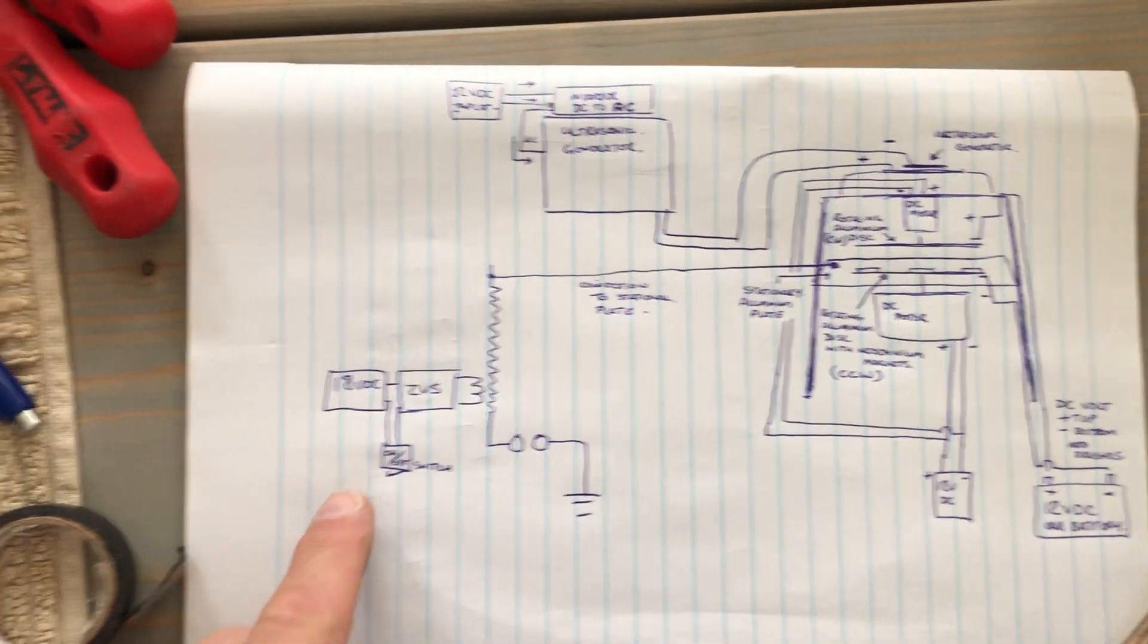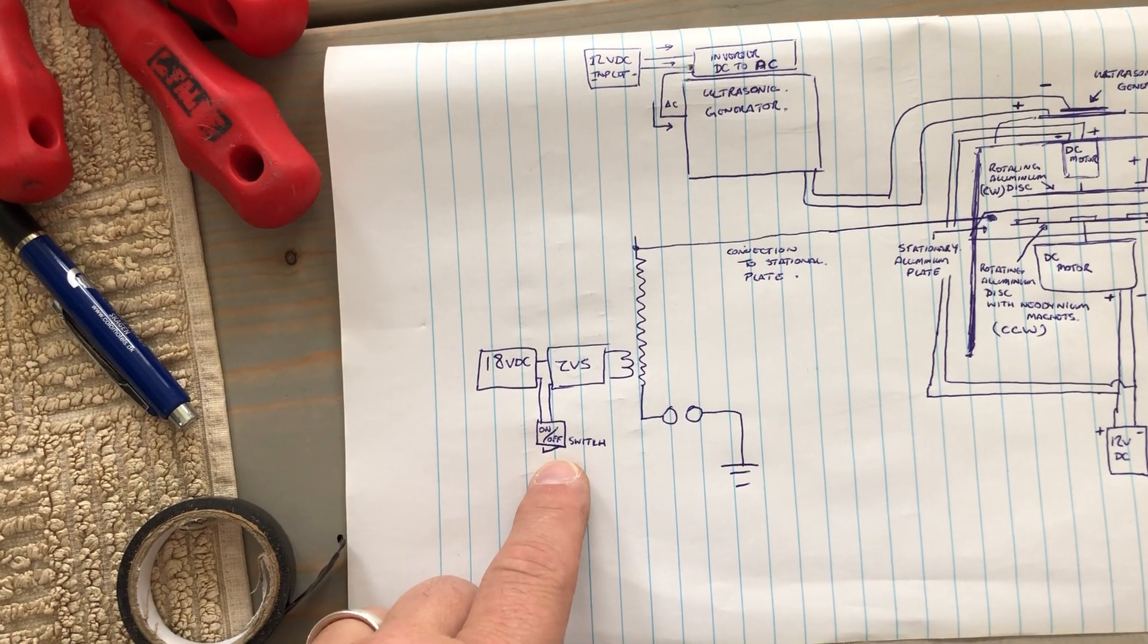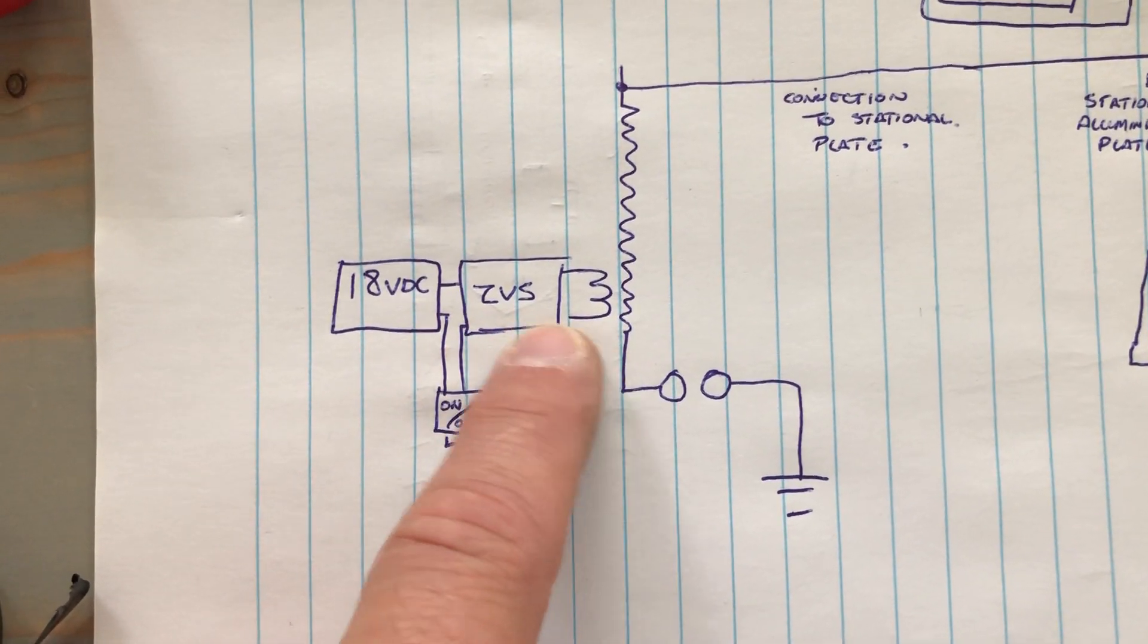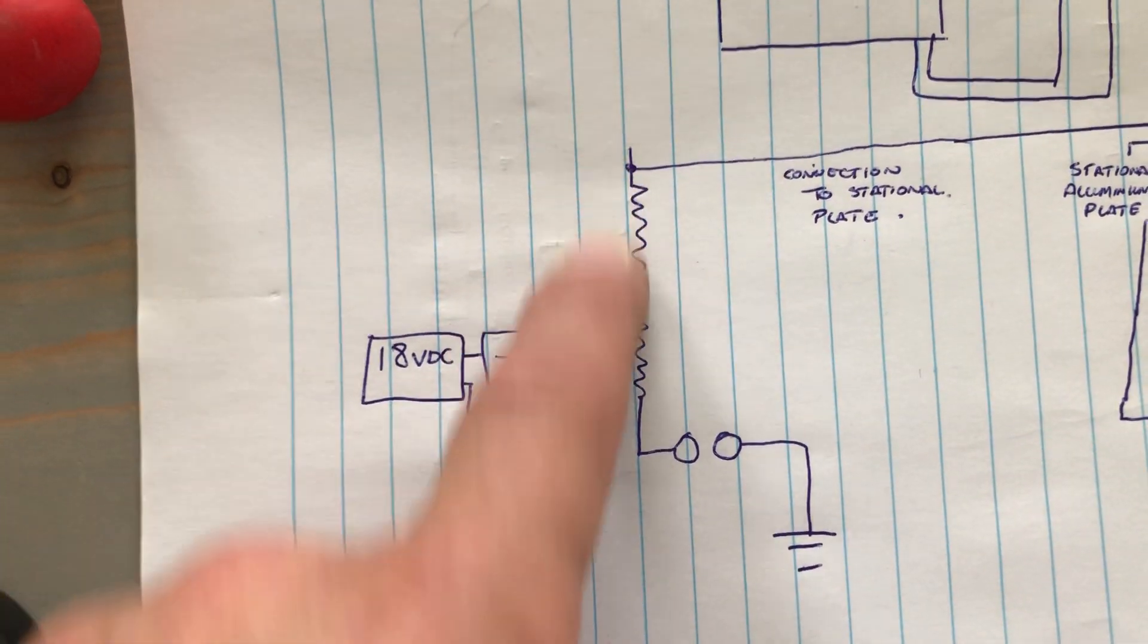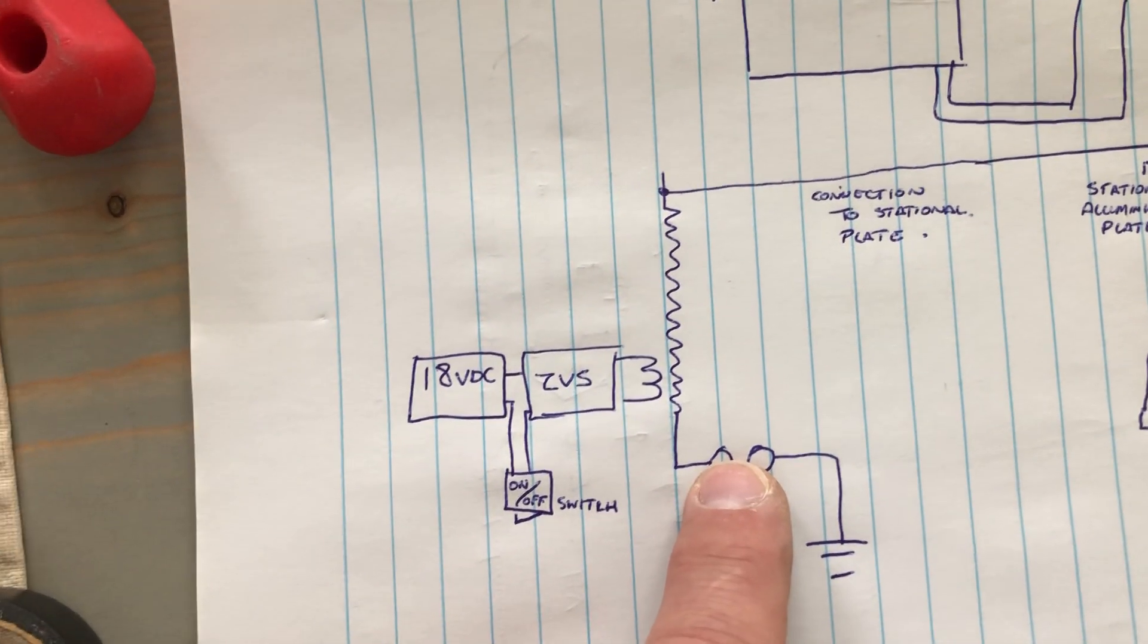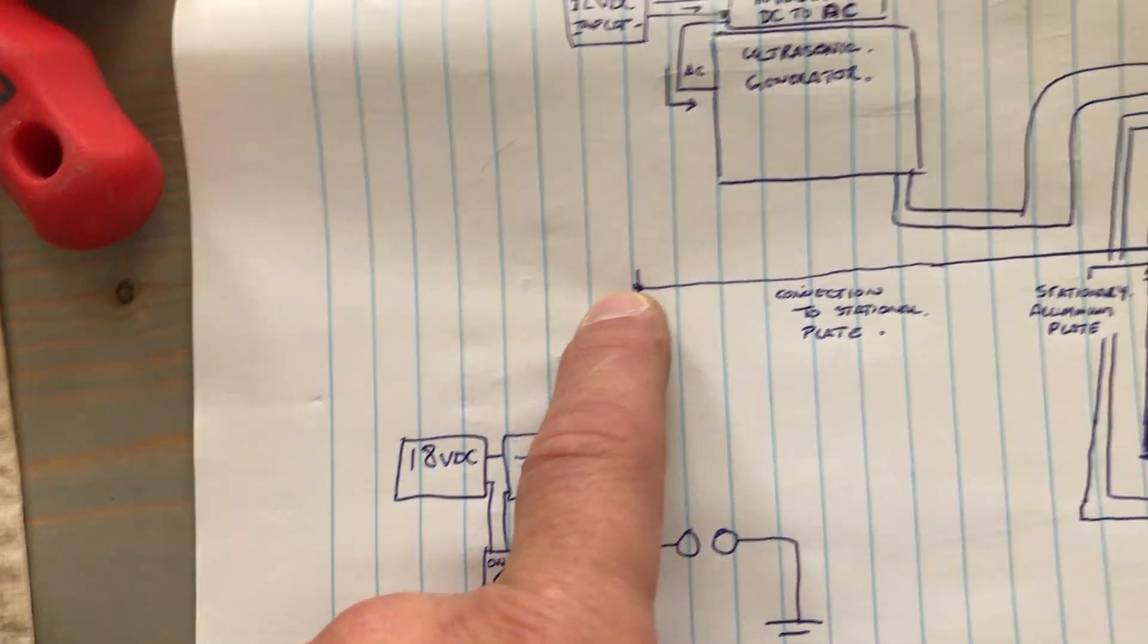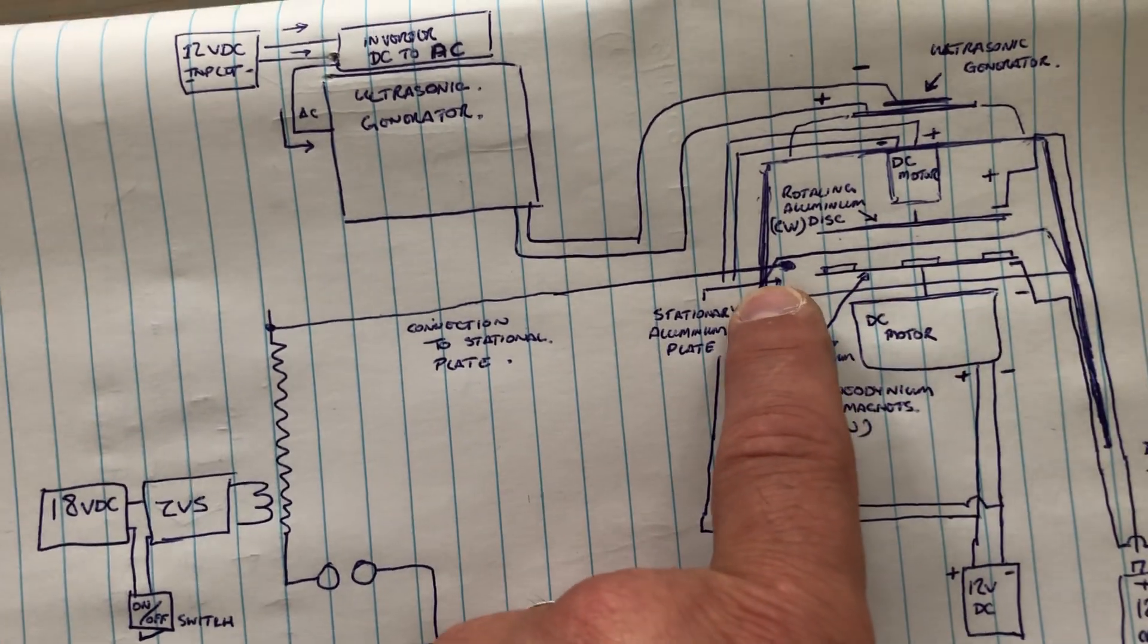And basically we have the Tesla setup, the Tesla coil, 18 volt battery input, a switch on off switch, the ZVS circuit powering L1 L2 is the main tower. I have a spike gap which should increase or stimulate the system even more. We come off that into the main plate which is stationary.